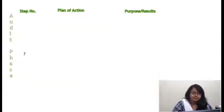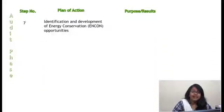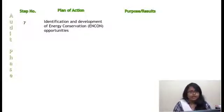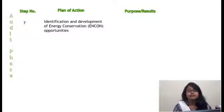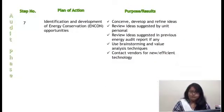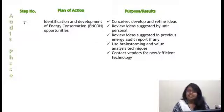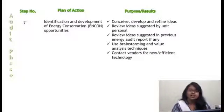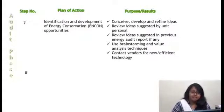Step 7 is identification and development of energy conservation opportunities. We can develop schemes and policies — identifying where losses are occurring and why our efficiency is low. To improve it, we can take many preventive measures. The result of this is that we get ideas, we can brainstorm, and do many things through identification and development of energy conservation opportunities.